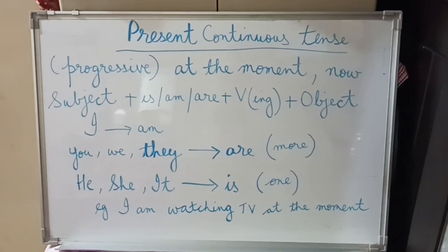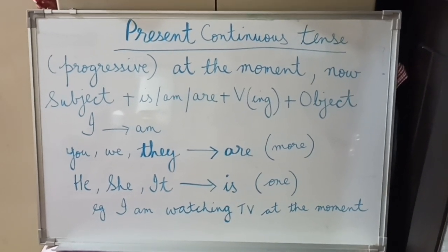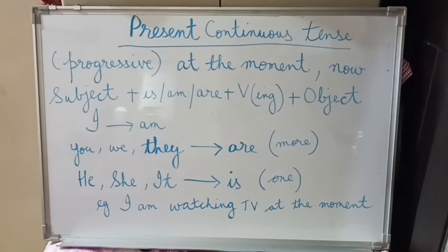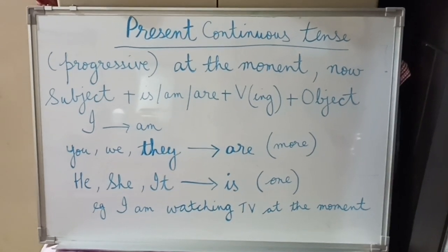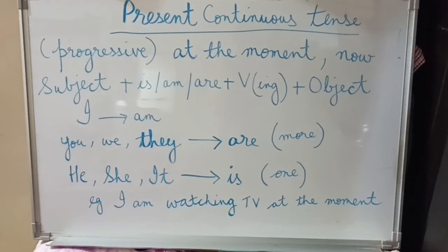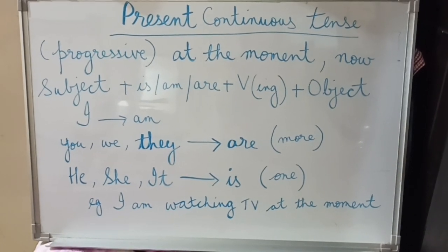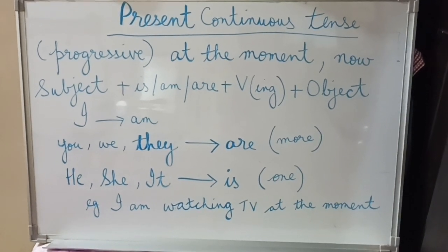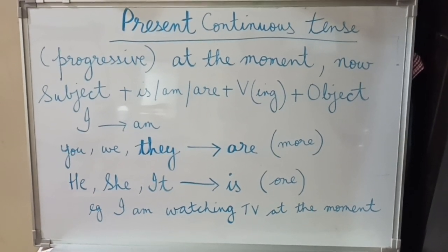In a sentence written in present continuous tense, the subject comes first. So I have written here: subject plus is, am, or are — these are called helping verbs — plus V-ing, meaning the ing form of the verb.